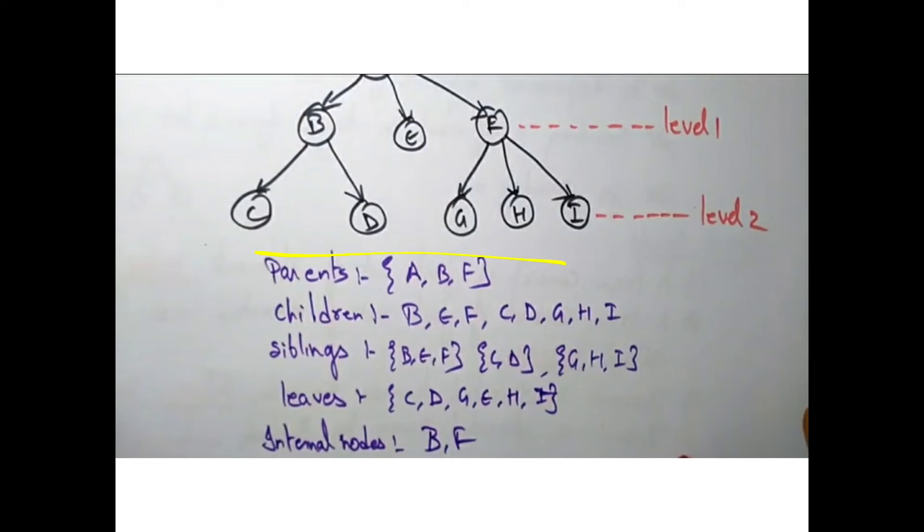This is called children. These are siblings. G, H, I are here. And B, E, F are the siblings.